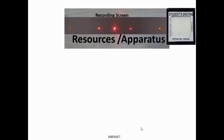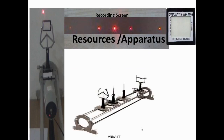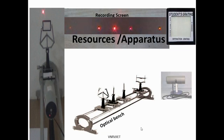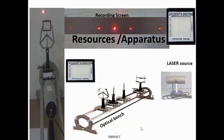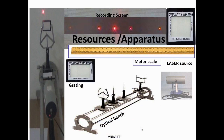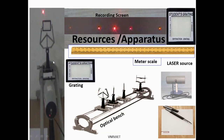The experimental setup includes an optical bench with various stands to mount the laser source and multiple slits or grating. The laser source is a semiconductor laser having wavelength 6500 angstroms. The grating has 15,000 lines per inch or 12,500 lines per inch. A meter scale is used to measure the distance between the source and the screen (capital D) and the distance between the grating and the screen (capital L). The diffraction pattern can be traced on an A4 size sheet using a pen or pencil.